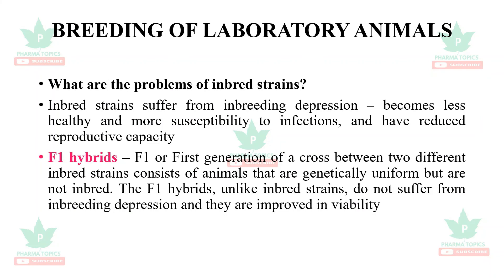What are the problems of inbred strains? Inbred strains suffer from inbreeding depression — they become less healthy, more susceptible to infections, and have reduced reproductive capacity. This is overcome by F1 hybrids, the first generation of a cross between two different inbred strains. F1 hybrids are genetically uniform but not inbred, and unlike inbred strains, they do not suffer from inbreeding depression and show improved viability and lifetime.